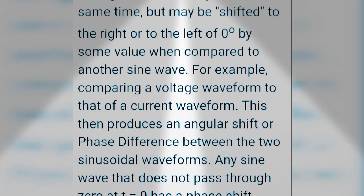This then produces an angular shift or phase difference between the two sinusoidal waveforms. Any sine wave that does not pass through zero at t = 0 has a phase shift.